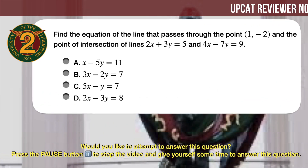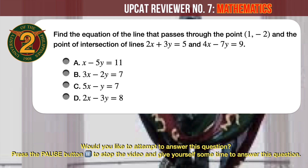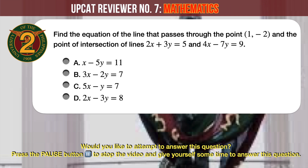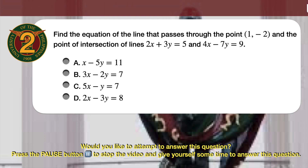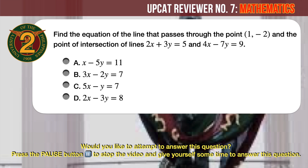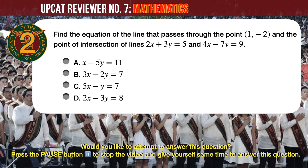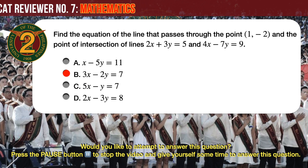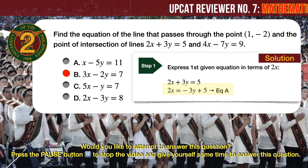Question number 2. Find the equation of the line that passes through the point x equals 1 and y equals minus 2, and the point of intersection of lines 2x plus 3y equals 5 and 4x minus 7y equals 9. A: x minus 5y equals 11. B: 3x minus 2y equals 7. C: 5x minus y equals 7. D: 2x minus 3y equals 8. The correct answer is B. Recall your geometry topic on 2-point form of a line. Let's start solving by expressing the first equation in terms of 2x, labeling the result as equation A.